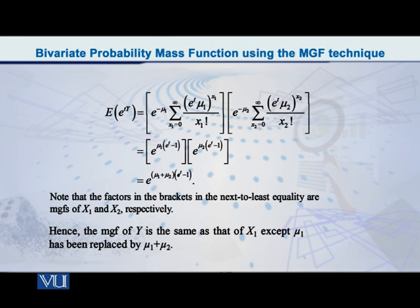So now in the final answer that has come, in the power, at the beginning, neither mu1 is written nor mu2 is written, but mu1 plus mu2 is written. But the rest of its overall form, that is exactly the same as that of those two. So this means that the random variable Y also has a Poisson distribution. The only thing is that the parameter of this particular Poisson distribution is neither mu1 nor mu2, but mu1 plus mu2.